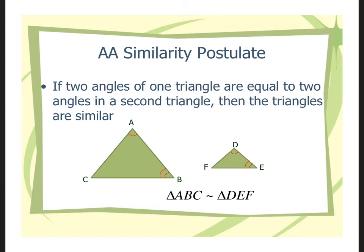If two angles of one triangle are equal to two angles of a second triangle, then the triangles are similar. Comparing this to proving triangles congruent, there was no angle-angle criterion for congruence because you can have a tiny triangle that's 60-60-60 and a huge triangle that's also 60-60-60. They're both equilateral but different sizes — now we're saying they could be similar.